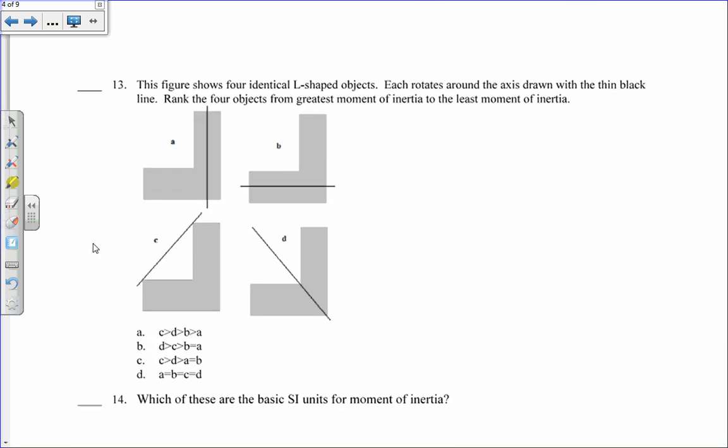This figure shows four identical L-shaped objects. Each rotates about the axis drawn with a thin black line. So I'm looking for the moment of inertia. I is defined as the sum of mr squared. So I want to look for the object with the most mass at the biggest radius. And that would be c is the biggest one. We can also see that situations a and b are identical. So that would tell me that a equals b. And situation d has a moment of inertia that's bigger than a or b, but less than c. That is answer c.